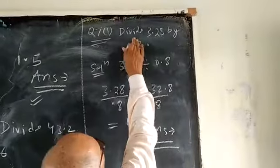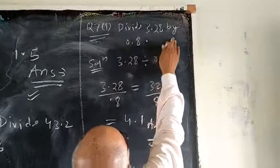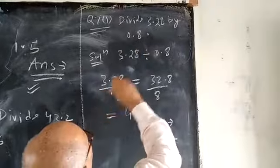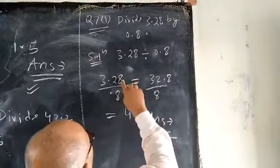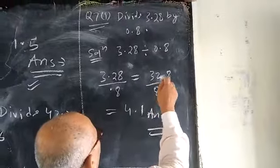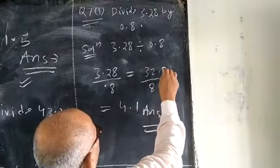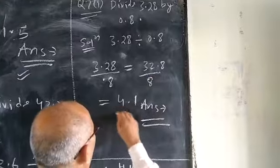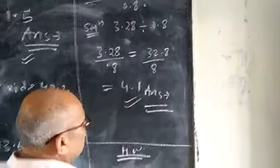Now, question number 7, first, divide 3.28 by 0.8. It will be equal to 3.28 divided by 0.8, it will be equal to 32.8 upon 8, which will be equal to 4.1. It is the required answer.